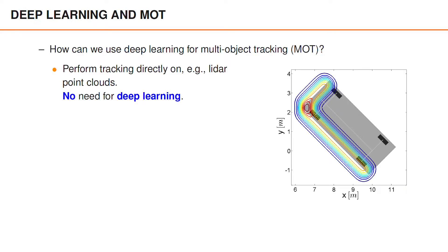The first alternative is to perform multi-object tracking in a model-based fashion and ignore the deep learning algorithms completely. As an example, we could perform extended object tracking and model vehicles as boxes.